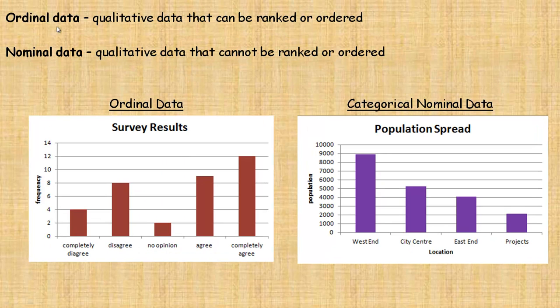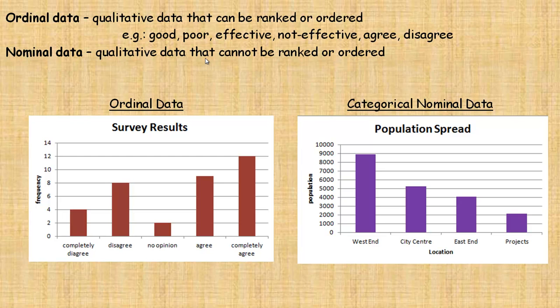On the second page here, qualitative data can be ordinal. Ordinal means it can be ranked or ordered. For example, you might ask people on a survey to rate something as good or poor, effective or not effective, to agree or disagree with a statement — those are things that can be ordered. Here's an example of what survey results could look like: completely disagree, disagree, no opinion, agree, or completely agree. That's what ordinal data would look like.